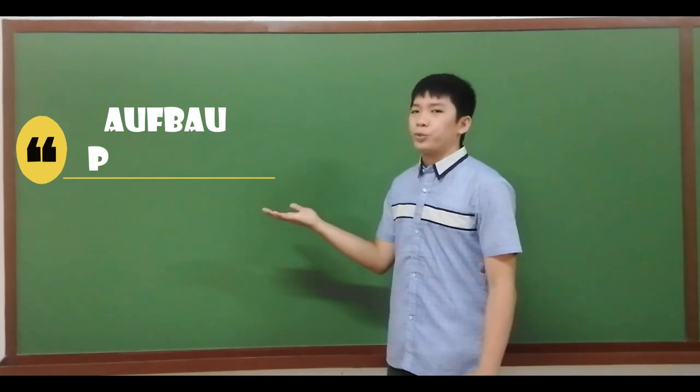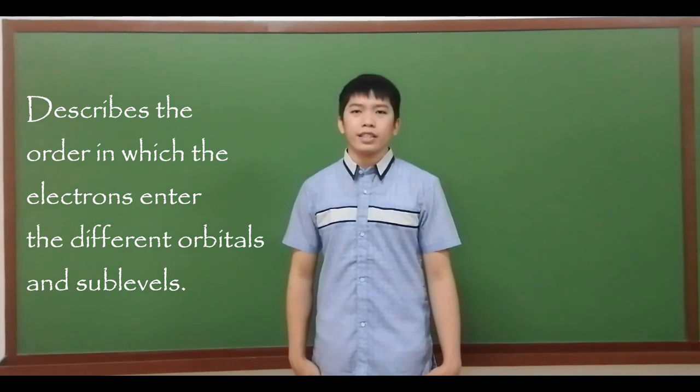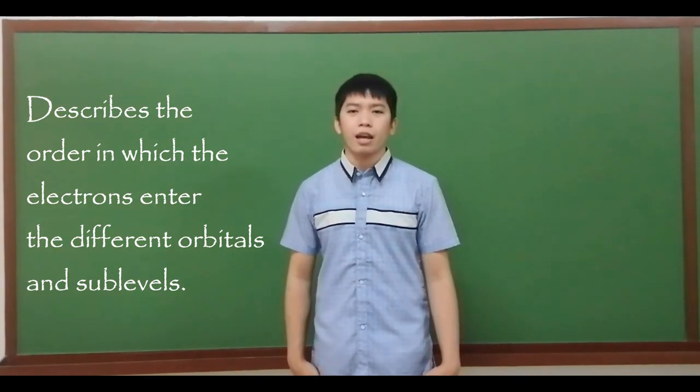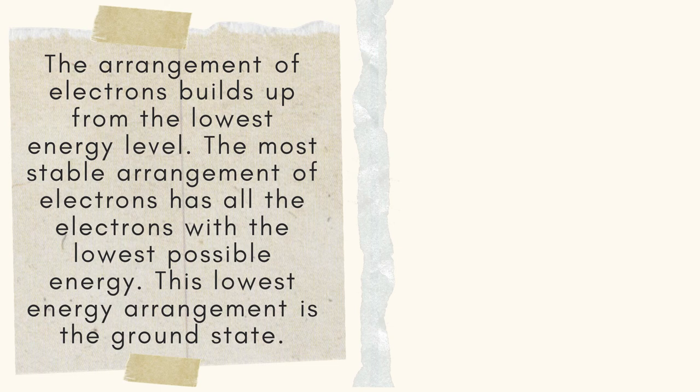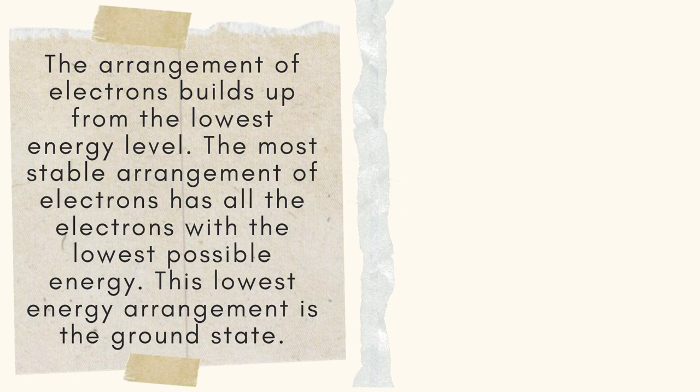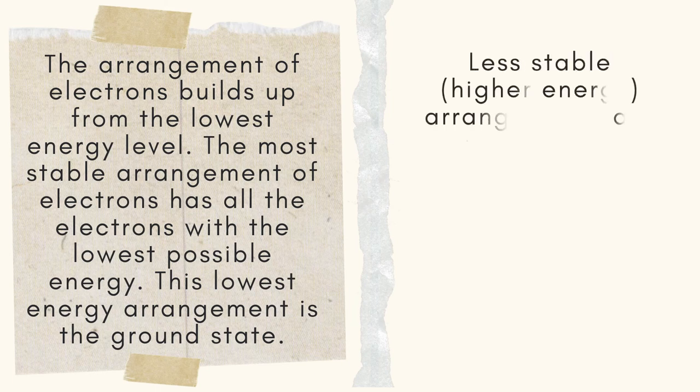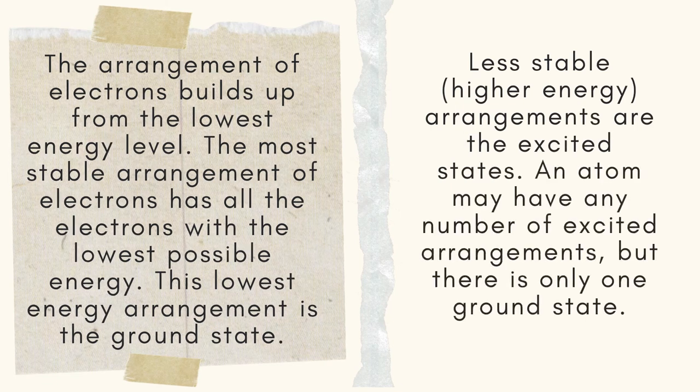The Aufbau principle, on the other hand, describes the order in which the electrons enter the different orbitals in its sub-levels. The arrangement of electrons builds up from the lowest energy level. The most stable arrangement of electrons has all the electrons with the lowest possible energy. This lowest energy arrangement is the ground state. Less stable or the higher energy arrangements are the excited states. An atom may have any number of excited arrangements, but there is only one ground state.